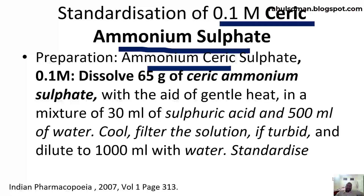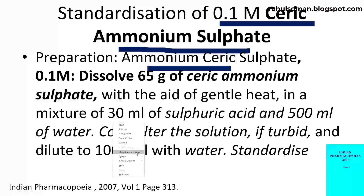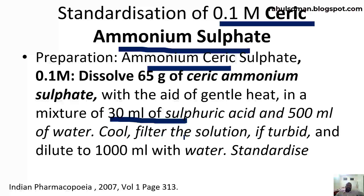Standardization of 0.1 molar ceric ammonium sulfate as per IP 2007, Volume 1, page 313. We prepare 0.1 molar ceric ammonium sulfate by dissolving 65 grams of ceric ammonium sulfate with the aid of gentle heat in a mixture of 30 ml of sulfuric acid and 500 ml of water. Then we cool and filter the solution if it is turbid, and dilute and make up the volume to 1000 ml.